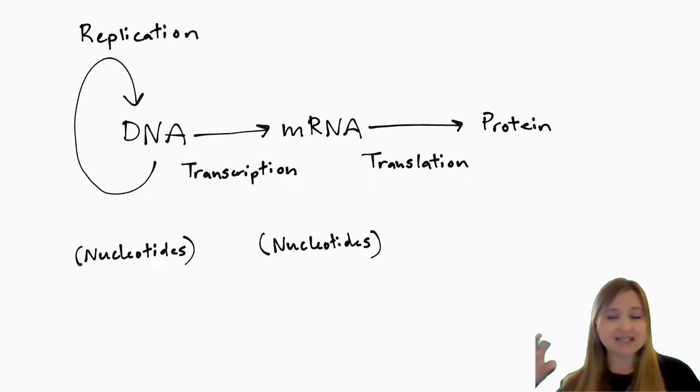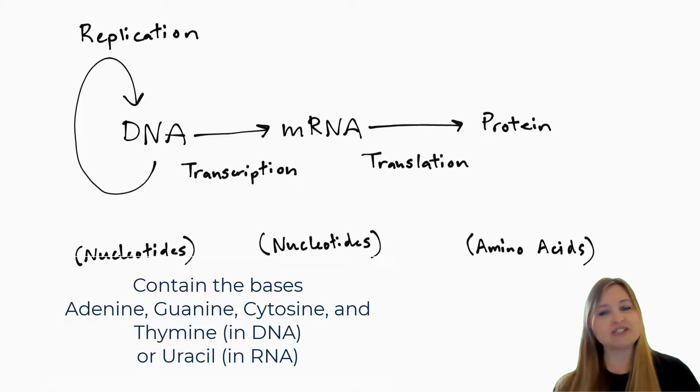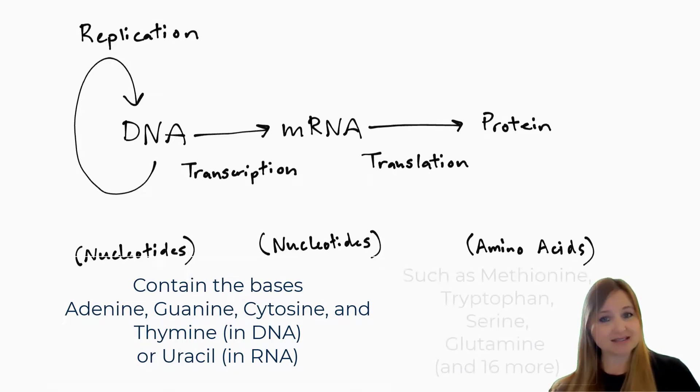But when that ribosome binds onto the messenger RNA, it reads the nucleotides, and it assembles a protein made out of amino acids. So DNA and RNA are made of nucleotides, but proteins are made out of amino acids.